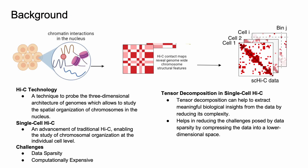Before we get started, I would like to give some background information about the Hi-C technology and single cell Hi-C, the challenges that are faced in single cell Hi-C, and our potential developing methods. Hi-C technology is a technique to probe the three-dimensional architecture of genomes, which allows us to study the spatial organization of chromosomes in the nucleus. Single cell Hi-C technology is an advancement of traditional Hi-C, enabling the study of chromosomal organization at the individual cell level.